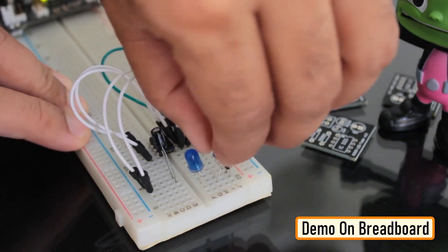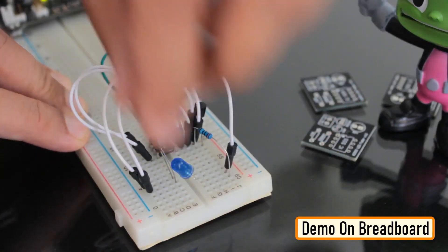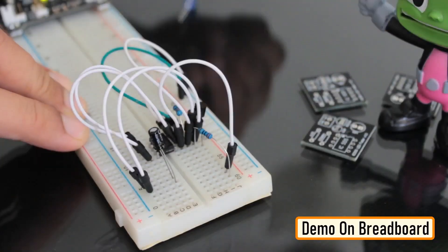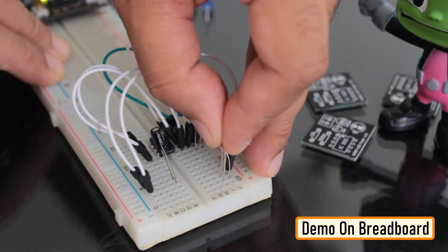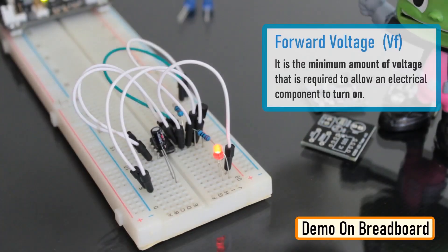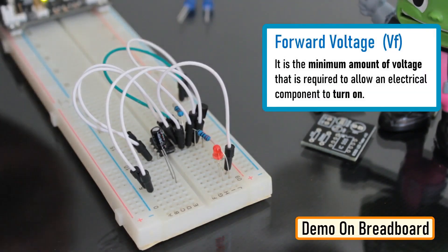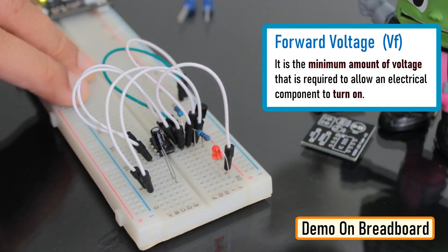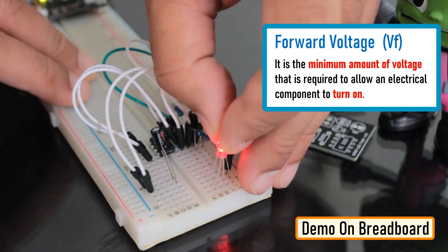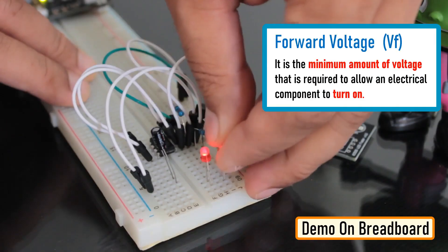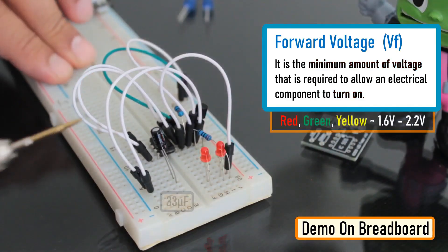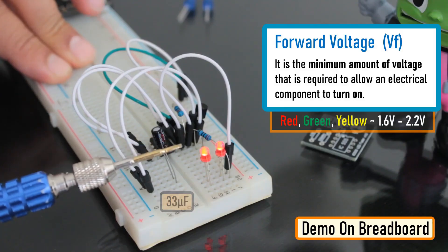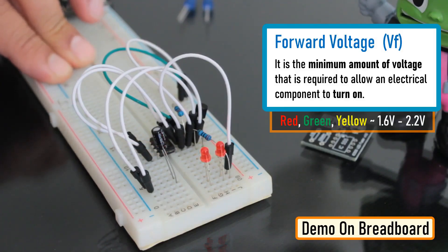Also, by replacing the blue LED with a red LED, we can make the LED to stay on longer than the blue one with the same value of capacitor. This is because the forward voltage of the blue LED is higher than that of the red LED. Forward voltage is the minimum amount of voltage that is required to allow an electrical component to turn on. The red, green and yellow LEDs have relatively low forward voltage ranging from 1.6 to 2.2 volts and hence stay on longer when the capacitor slowly charges or discharges.